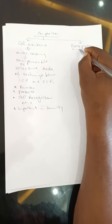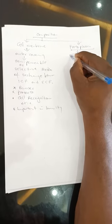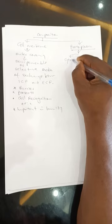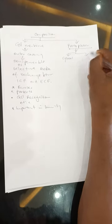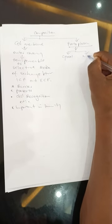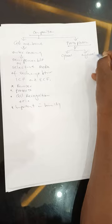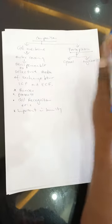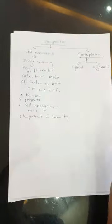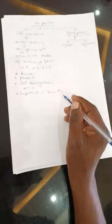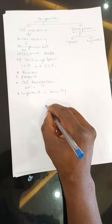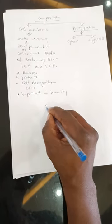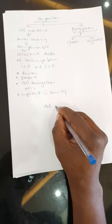The protoplasm refers to the cytosol — the fluid component — along with the organelles present inside the cell. So organelles and the cytosol together form the protoplasm, which is the part of the cell bound by the cell membrane.